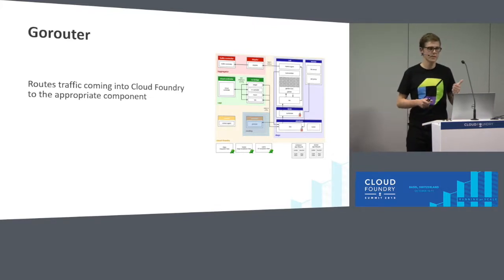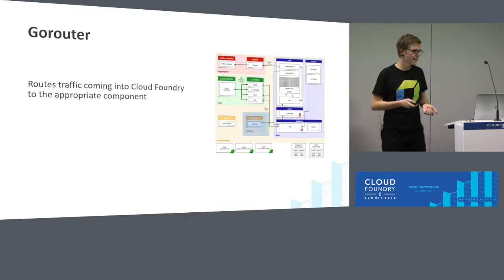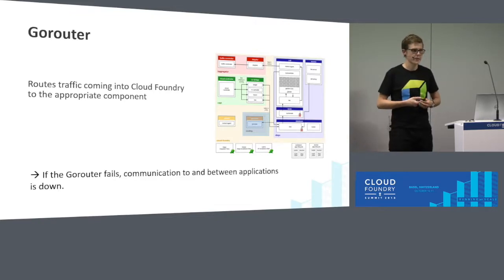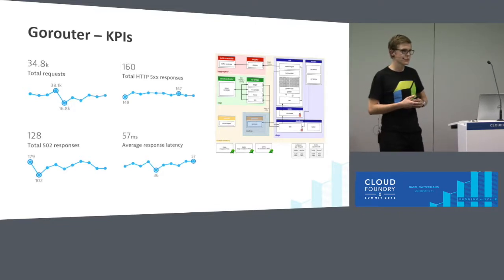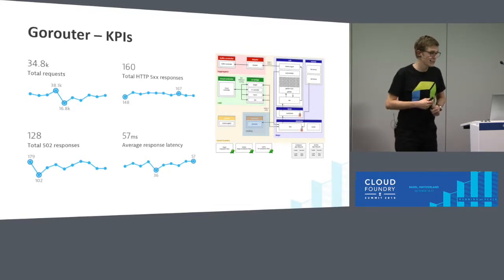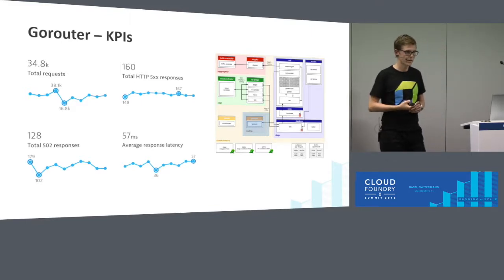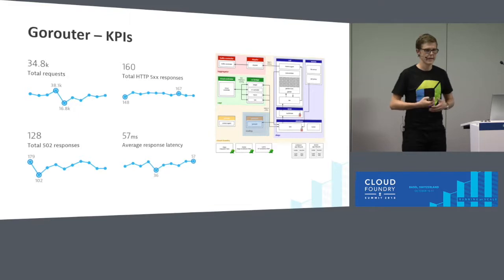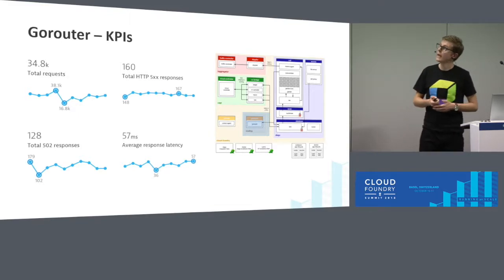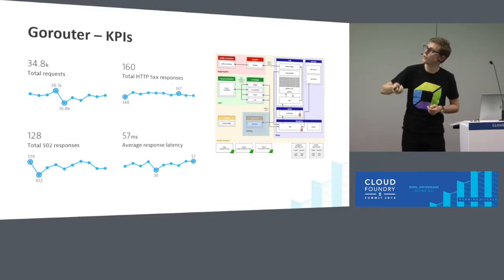The GoRouter has one simple task: to keep communication to and within Cloud Foundry up and running. When a GoRouter goes down, the entire communication comes to a standstill. For characterizing the GoRouter, Pivotal has recommended four KPIs. The first is the total number of requests — how many requests are currently processed by the GoRouter. Then we have the average response time, which tells us how responsive the GoRouter is, depending on the application behind it and the current workload. Additionally, there are two KPIs for the number of 502 errors and the number of other 500 errors.